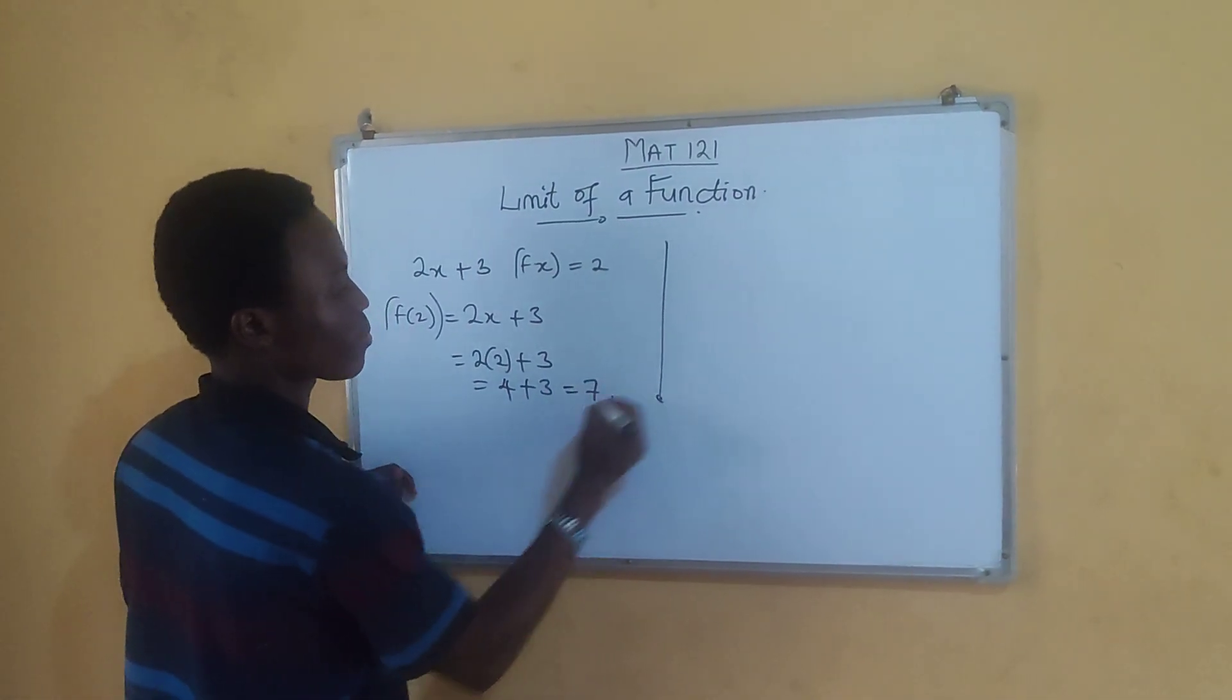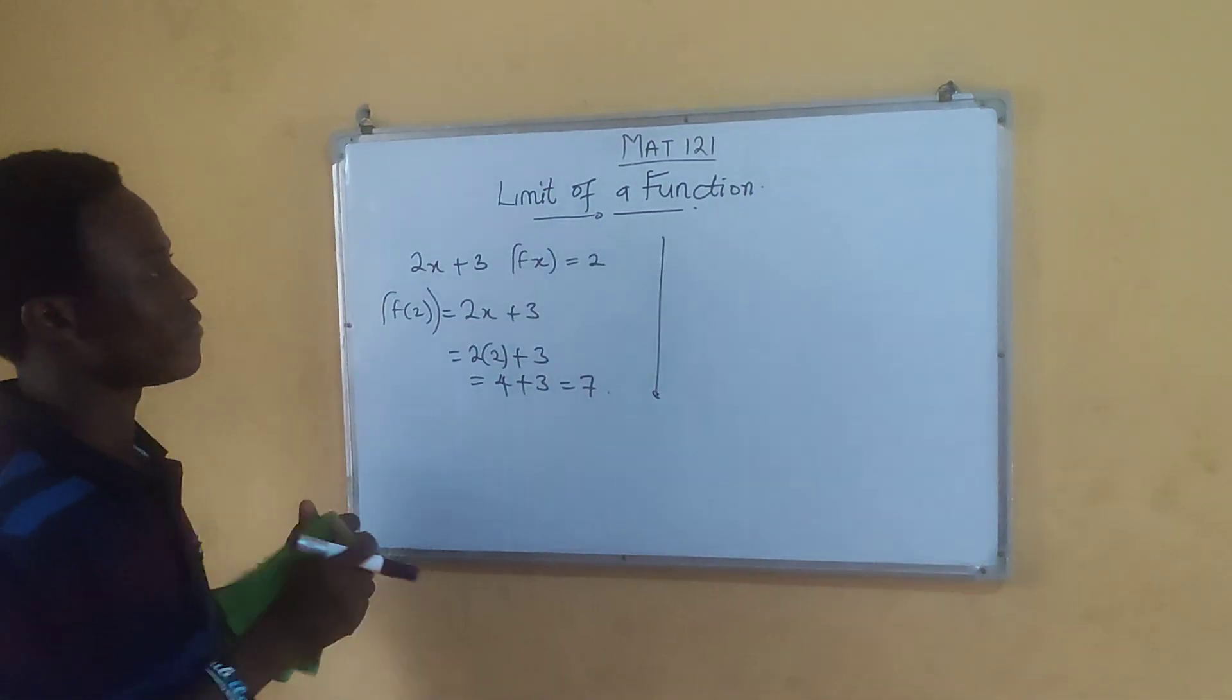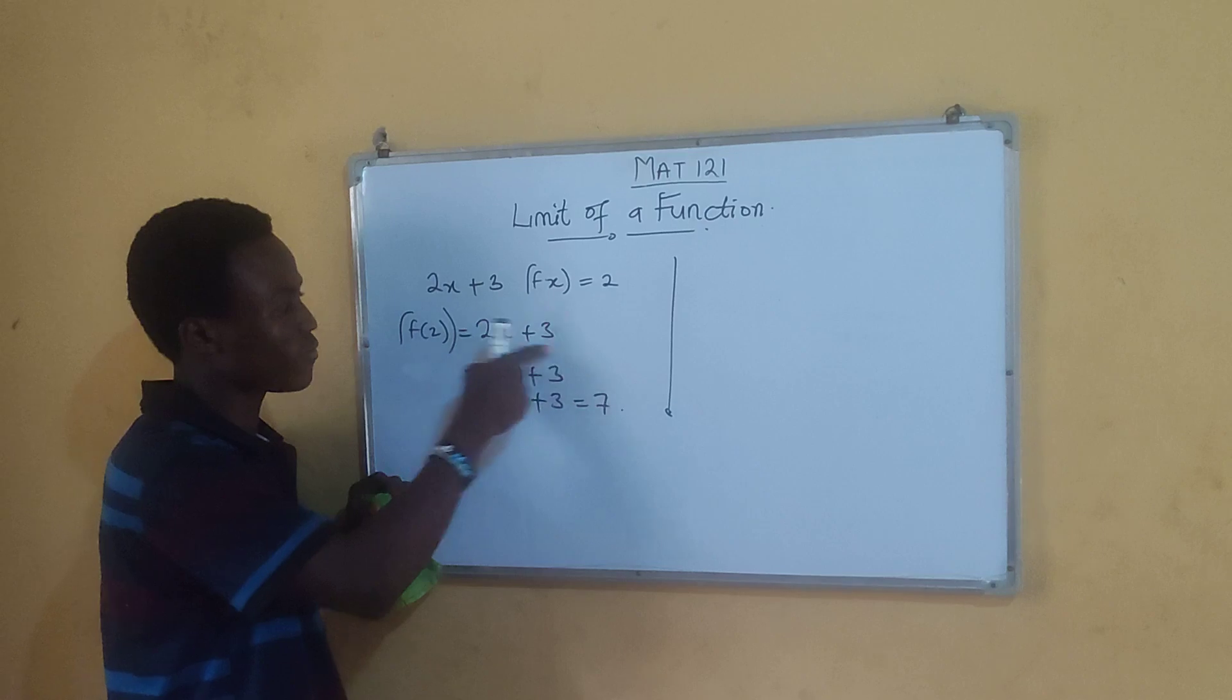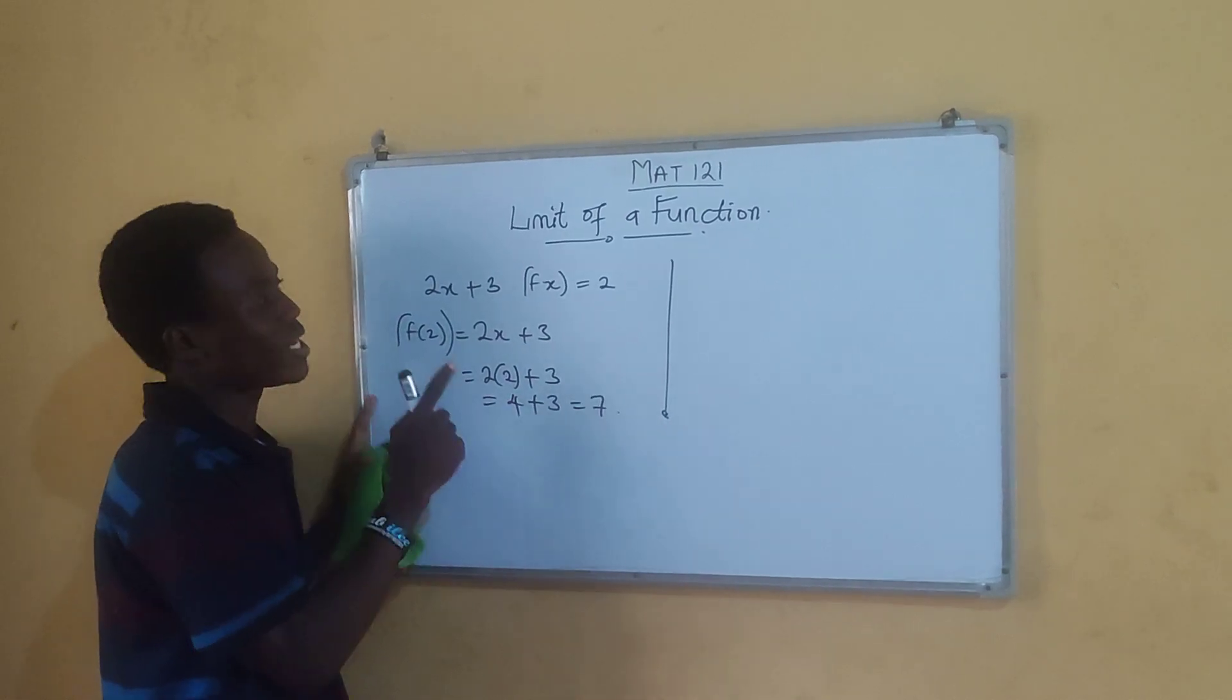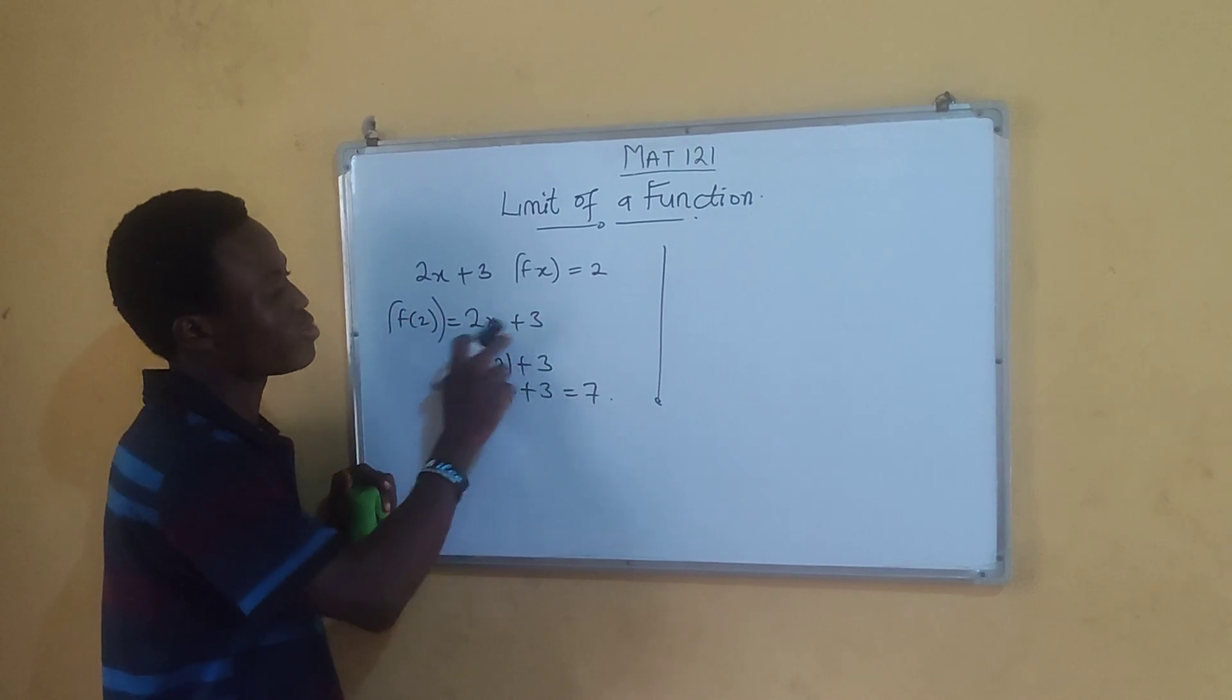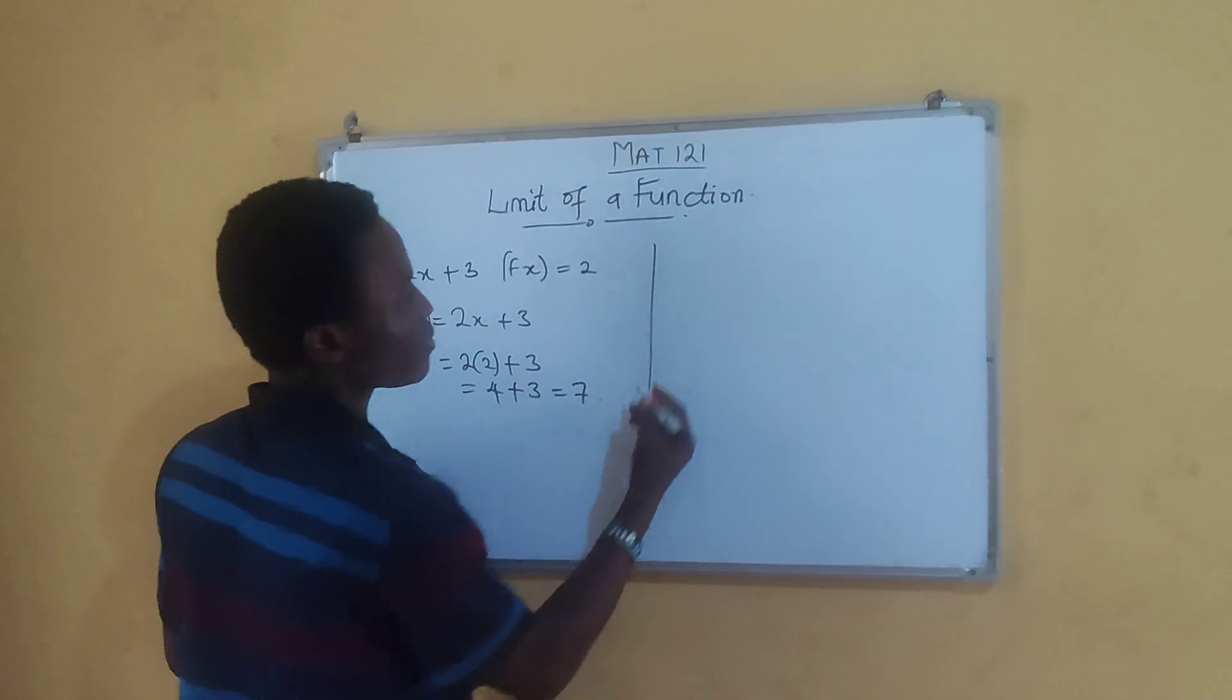When it comes to limits, a limit is just the value where every function tends to. So the limiting value of this function is 2. That's why they call it the limit of a function. The limit is the value that is responsible for every function. That's the end product of every function.